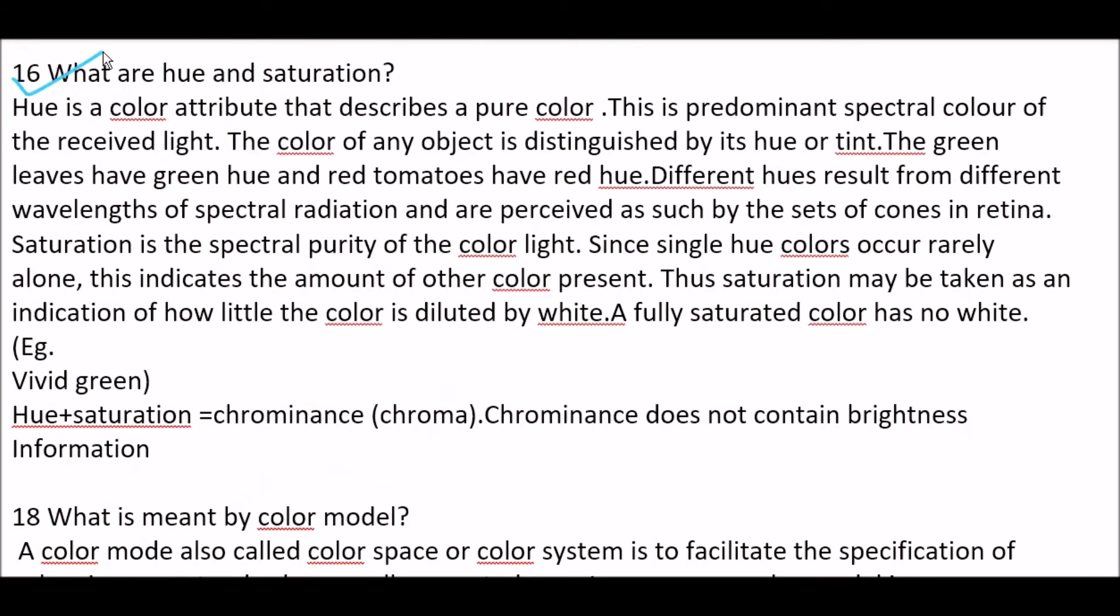Next question. What are hue and saturation? Answer is, hue is a color attribute that describes a pure color. This is predominant spectral color of the received light. The color of any object is distinguished by its hue or tint. The green leaves have green hue and red tomatoes have red hue. Different hues result from different wavelengths of spectral radiation and are perceived by the set of cones in retina. Saturation is the spectral purity of the color light. Since single hue colors occur rarely alone, that indicates the amount of other color present. Thus, saturation may be taken as an indication of how little the color is diluted by white. A fully saturated color has no white, for example, vivid green. Hue plus saturation equals chrominance, and chrominance does not contain brightness information.